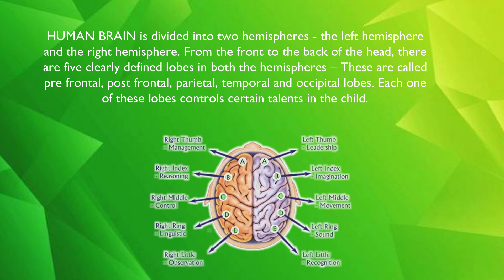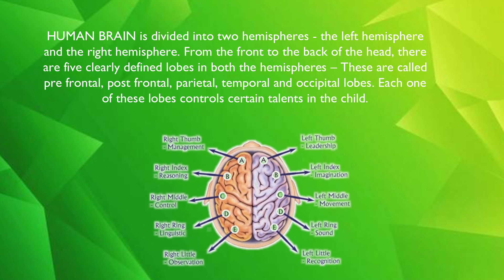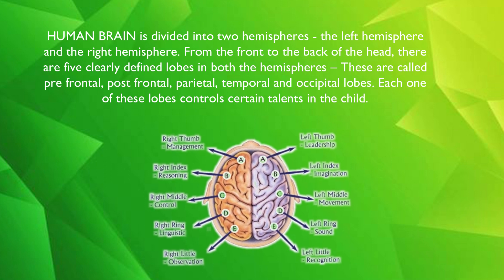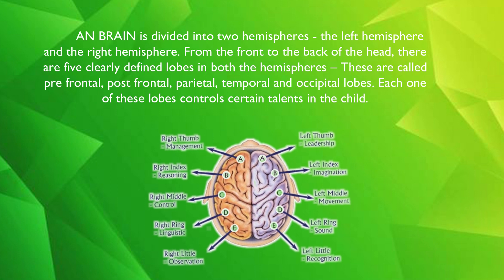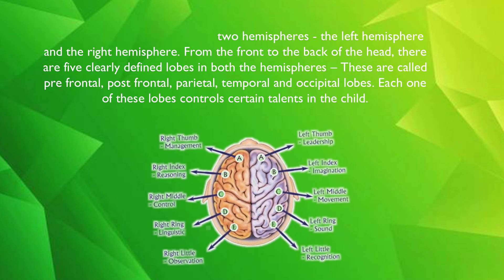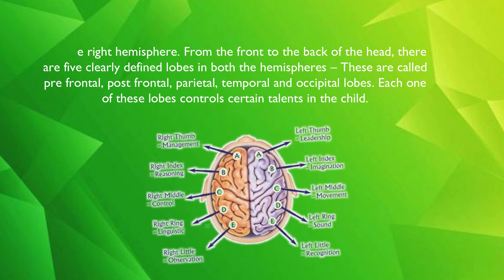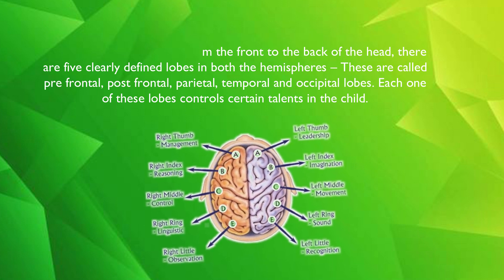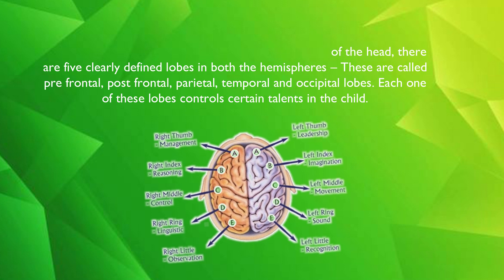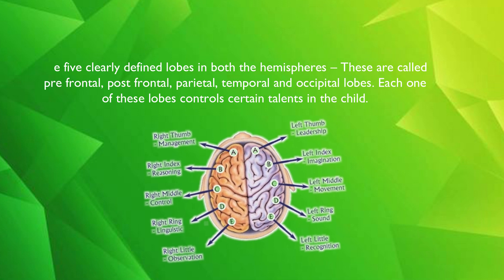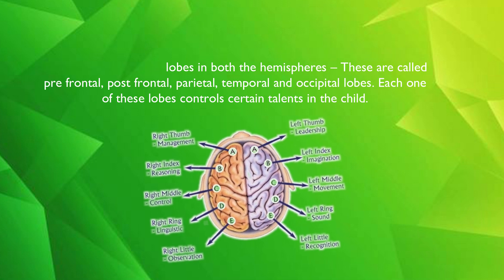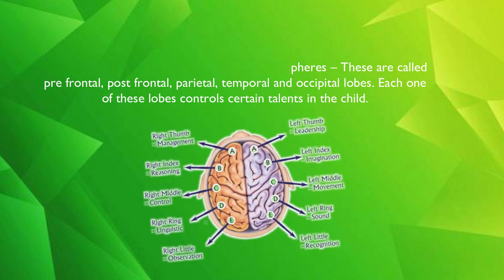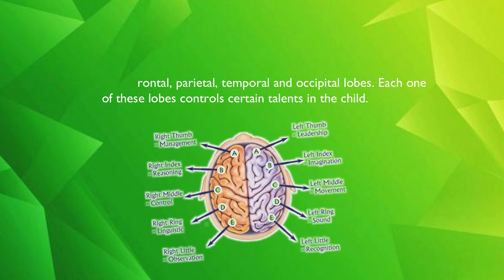There are millions of nerves connecting the five lobes of the left hemisphere of the brain to the five fingers of the right hand of the child, and vice versa. The health of each lobe of the brain is reflected in the health of the fingerprints of the corresponding finger.